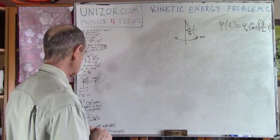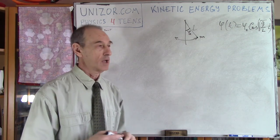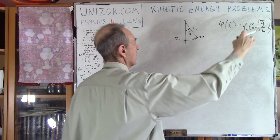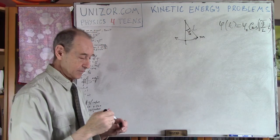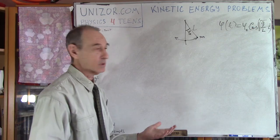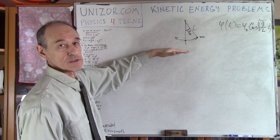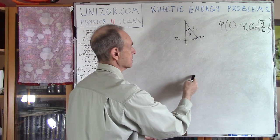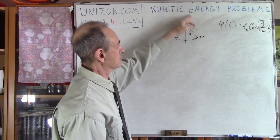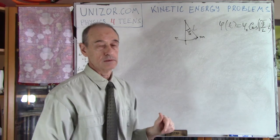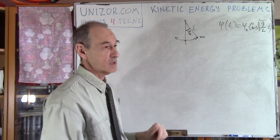What we need to find is the kinetic energy at the lowest point. When the pendulum passes through the bottom, that's where its linear speed is maximum. Starting from rest at angle φ₀, gravity accelerates it toward the bottom, and then it decelerates on the other side.